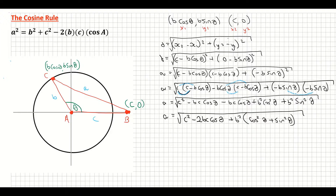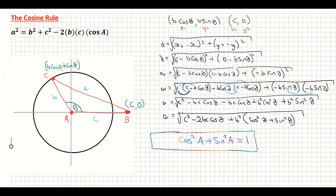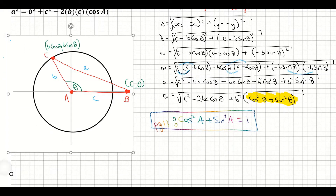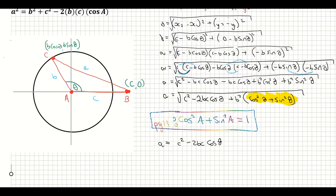Now focus on page 13 of your log tables, which states that cos squared A plus sine squared A equals 1. We have cos squared theta plus sine squared theta in our expression, which is the same thing — theta is just the angle. So we substitute that with 1: A equals the square root of c squared minus 2BC cos theta plus B squared times 1.